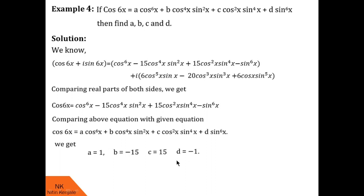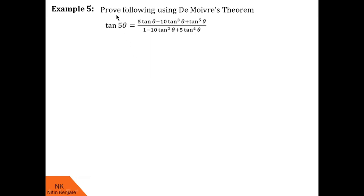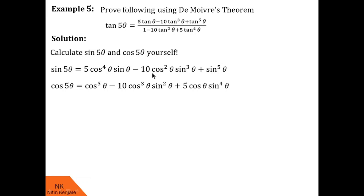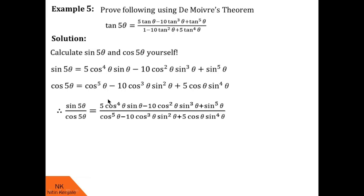Now let us proceed for example number 5, which is the last example. Here we are asked to prove using De Moivre's theorem that tan 5θ equals this large expression. To find tan 5θ, the idea is to first find sin 5θ and cos 5θ expansions, then divide them. I assume you know how to find those expansions, so I skip directly to writing the expansions of sin 5θ and cos 5θ. After dividing sin 5θ by cos 5θ we get tan 5θ on the left. However, this does not yet match the required form, which uses tan functions throughout.